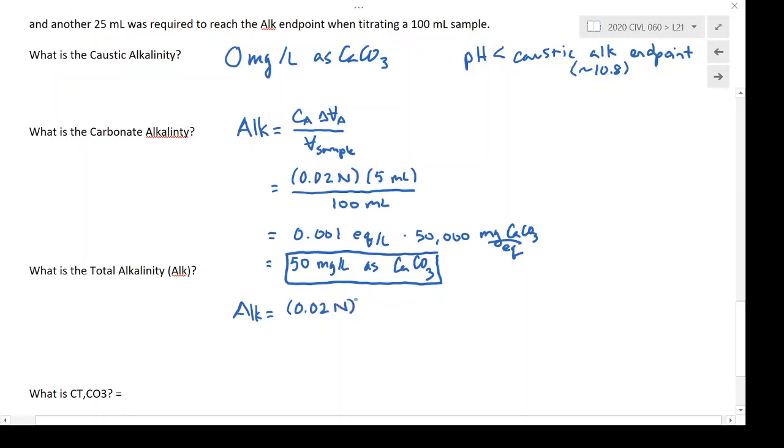now rather than using 25 mils, I'm actually going to use the total acid volume to get down to that endpoint. So I'm going to add the 25 to the 5, still 100 mil sample volume.